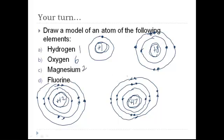And fluorine has three shells also and there are one, two, three, four, five, six, seven valence electrons on the valence shell.